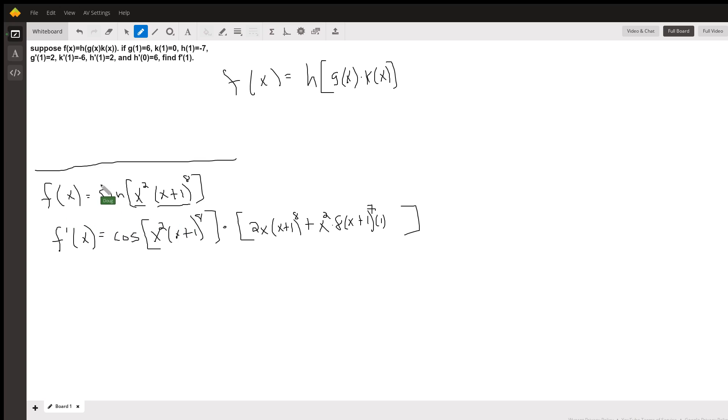I have to take the derivative of this function right here, which is cosine, and everything inside the sine function stays the same. It's the cosine of this product of two functions, but then I have to multiply by the derivative of the inside. That's the chain rule.